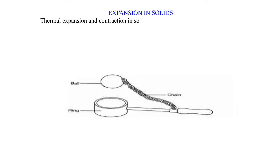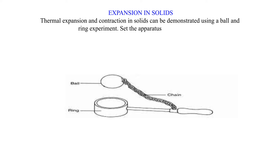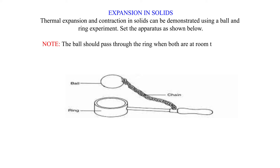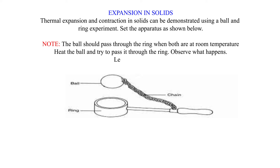Expansion in solids. Thermal expansion and contraction in solids can be demonstrated using a ball and ring experiment. Set the apparatus as shown below. Note: the ball should pass through the ring when both are at room temperature. Heat the ball and try to pass it through the ring. Observe what happens. Leave it for some time.